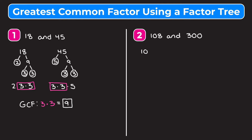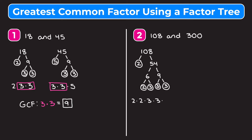We're going to start by making a factor tree for 108. Because it's even, it's easiest to start with two and 54. Two is prime, so we circle it. 54 we can break up into six and nine. Six and nine are both composite, so we have to continue to break them up. We break six into two times three — those are both prime — and nine into three times three — those are both prime. So the prime factorization of 108 is two times two times three times three times three.